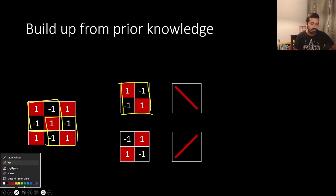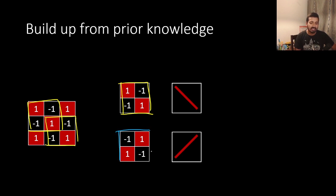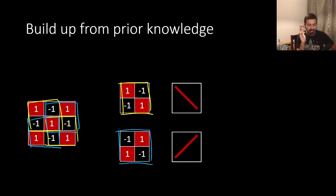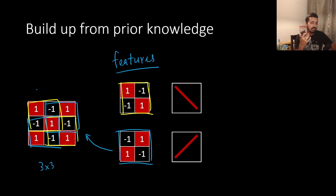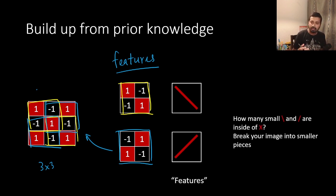I'll give you some more insight. I will show you one part — the left part and the right part. I would like to ask that we can match this matrix. How many matches can you find? If you have the features of this image, you can choose features. The purpose is to break your image into smaller pieces and ask how many of these features are there in your original image.